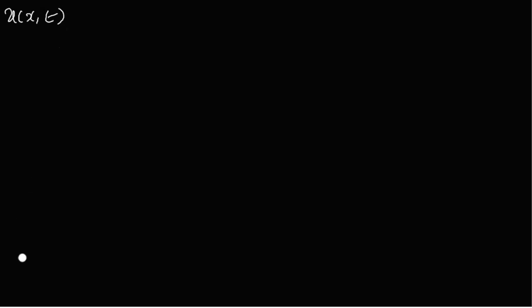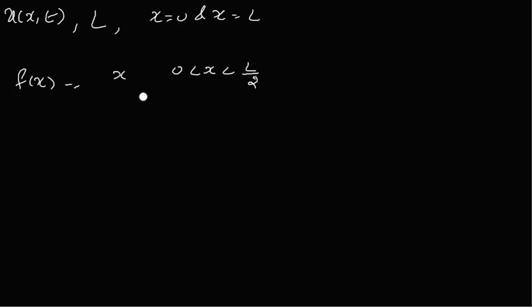Find the temperature u(x,t) in a long thin bar of length L units, insulated laterally. The ends x=0 and x=L are kept at 0 temperature, and the initial temperature is given by f(x) = x if 0 < x < L/2, and f(x) = L minus x if L/2 < x < L.